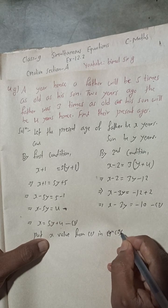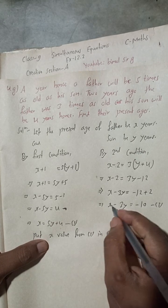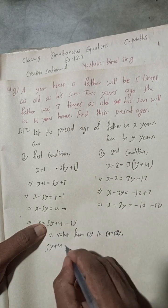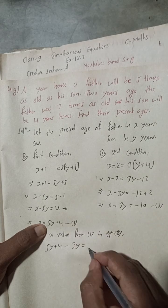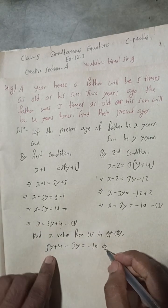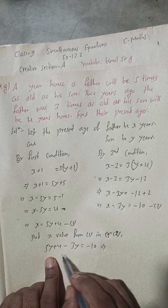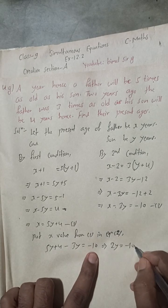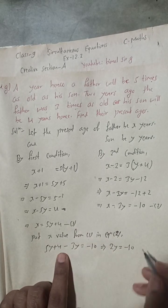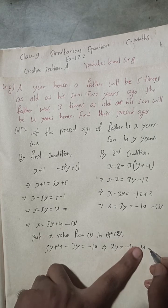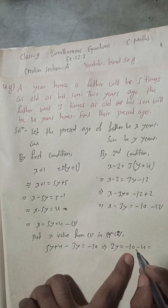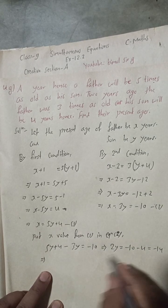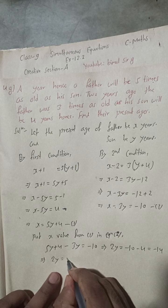Now putting x value from equation one into equation two: in place of x we write five y plus four, so five y plus four minus three y equals minus 10. This gives two y equals minus 10 minus 4, which is minus 14.